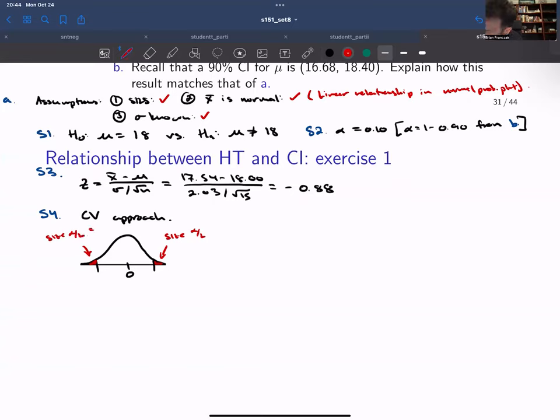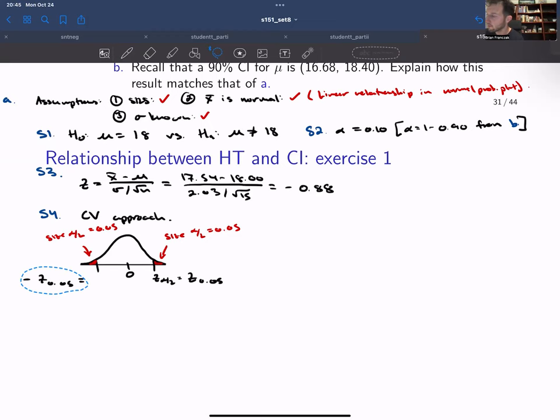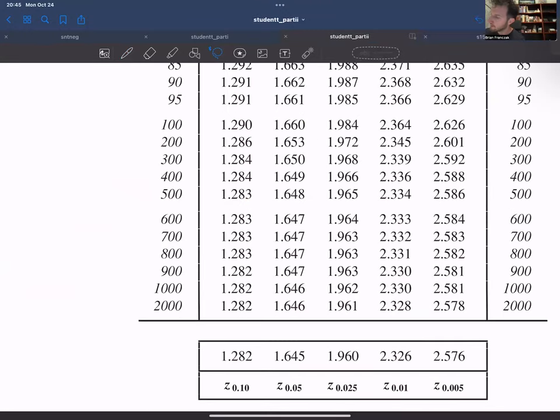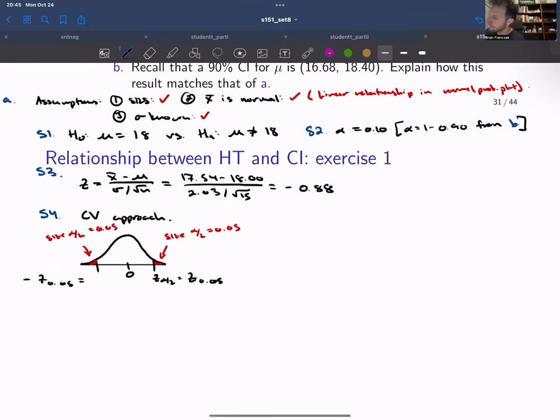This part here is now a size alpha over two, and this part here is also a size alpha over two. So we're taking that full significance level 0.1 and splitting it equally into each tail, so 0.05. That means that my critical value is z alpha over two, which is z 0.05. The easiest way to do this is to go to the T table and scroll down to the bottom. The bottom of the T table gives us z 0.05, which is 1.645. So the upper tail critical value for this test is 1.645, and the lower tail value is simply negative 1.645.